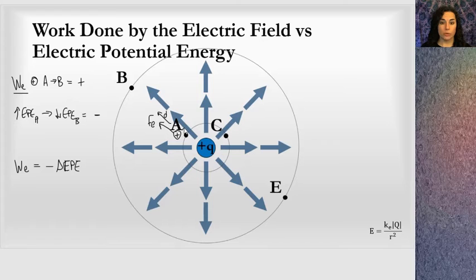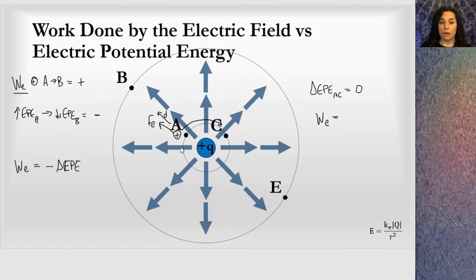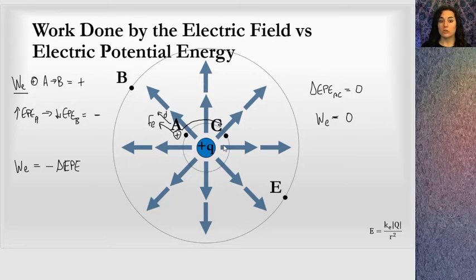Another thing to consider: what if I move this positive test charge from point A to point C? This is equivalent to moving from one point in a room to another — you're not changing gravitational potential energy because you're along an equal surface. Moving from A to C is along an equipotential surface, so the change in electric potential energy is zero. Also, the work done by the electric field is zero because the motion is perpendicular to the field lines. Similarly, the change in potential energy from A to B equals the change from C to E.